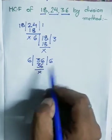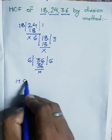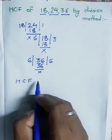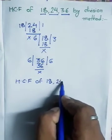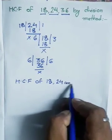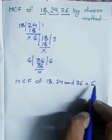So HCF, called the highest common factor, HCF of 18, 24, and 36 is equal to 6. Answer.